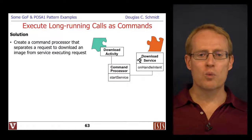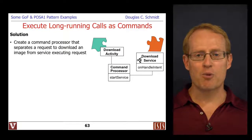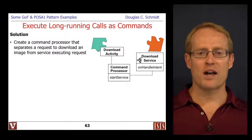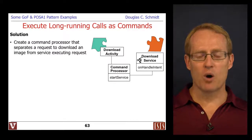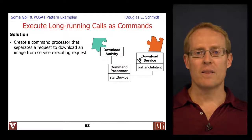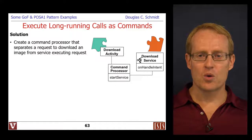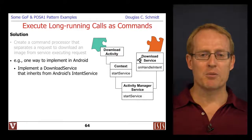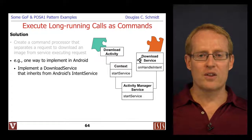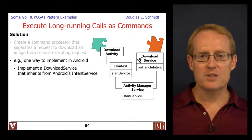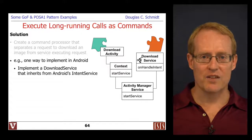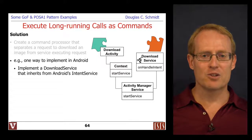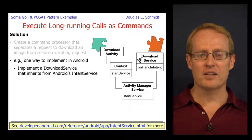The solution is to create a command processor that separates the request to download an image from the service that executes the request, so the two run asynchronously without blocking the activity. In Android, this is implemented using the Android IntentService, which is essentially an implementation of the command processor pattern. You can implement the download service by inheriting from Android's IntentService.